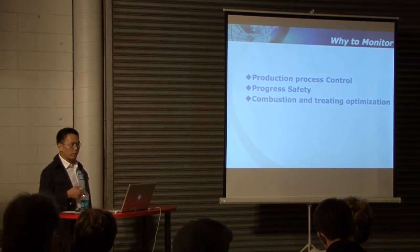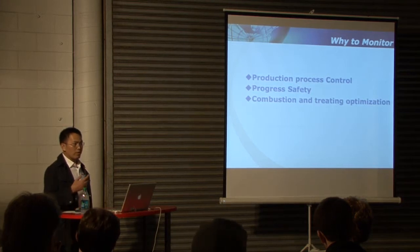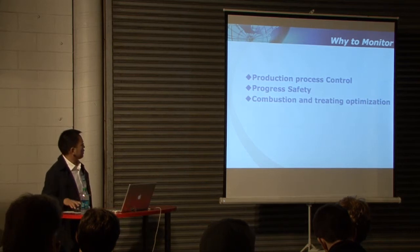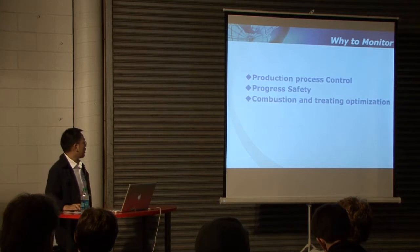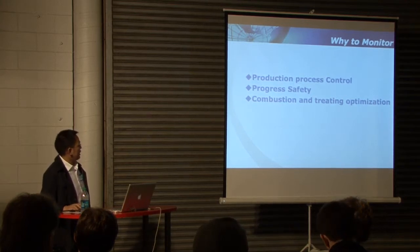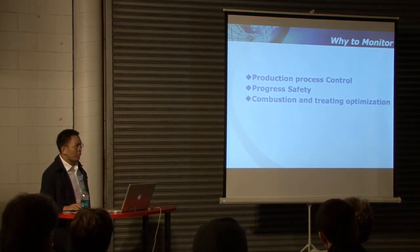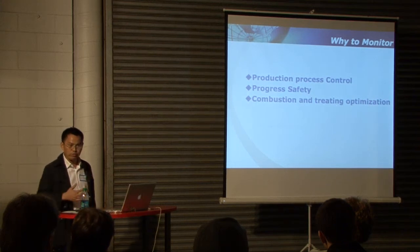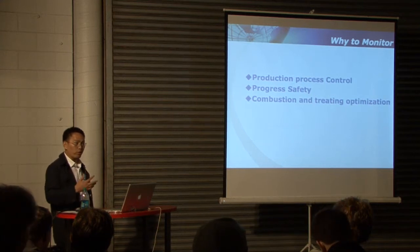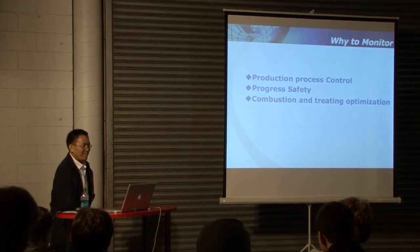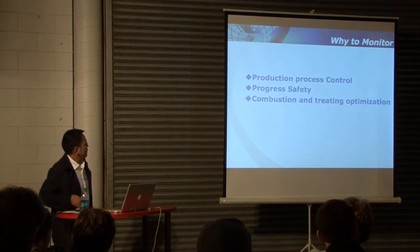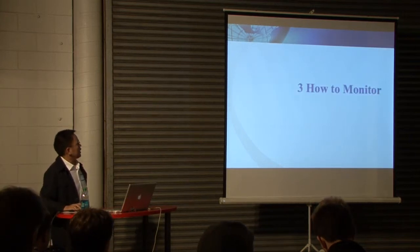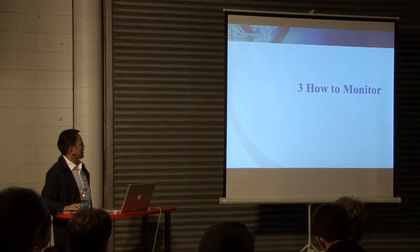Another example for safety is, for the blast furnace, oxygen is very important. When the oxygen increases, it means the leakage of water. Then this is a problem for the blast furnace. So process safety monitoring is very important. The third reason for monitoring the gas composition for the reducing gas is for combustion and treatment optimization. For example, for combustion, we should adjust the air and the fuel rate. For the combustion engine, how to control the air flow and the fuel flow? It depends on the demand. So it's very important for the air fuel rate control for combustion.